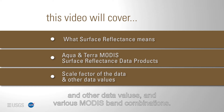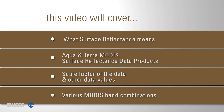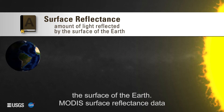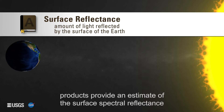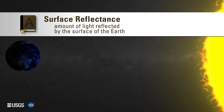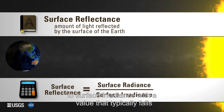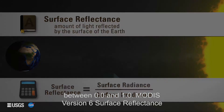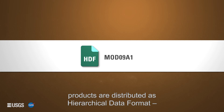Surface reflectance is the amount of light reflected by the surface of the Earth. MODIS surface reflectance data products provide an estimate of the surface spectral reflectance from the ground with atmospheric correction. Surface reflectance is a unitless ratio of surface radiance to surface irradiance, with a value that typically falls between 0 and 1.